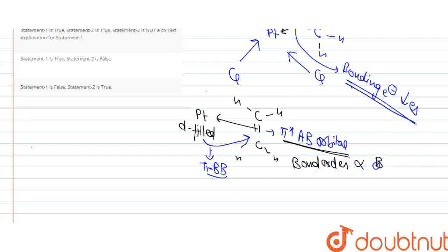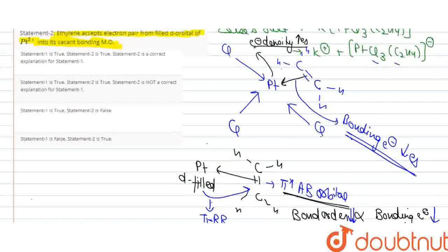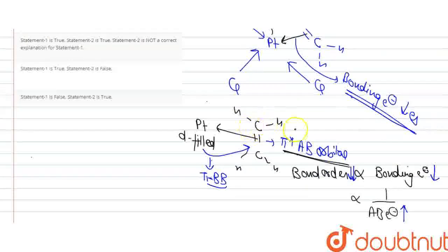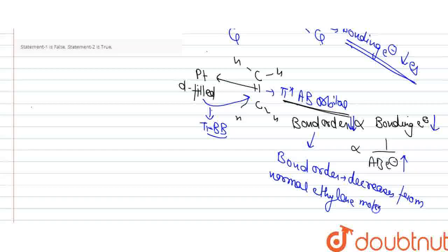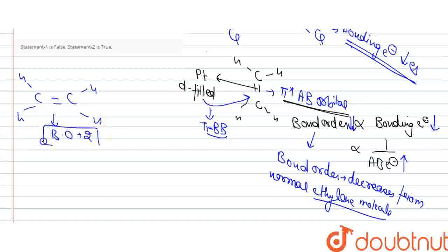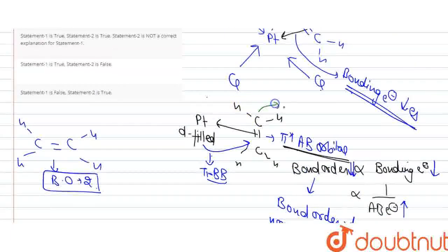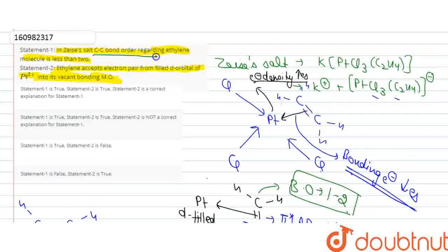Bond order is directly proportional to bonding electrons and inversely proportional to anti-bonding electrons. So if anti-bonding electrons increase, the bond order decreases from the normal ethylene molecule. For C₂H₄, the C-C bond order here is reduced.